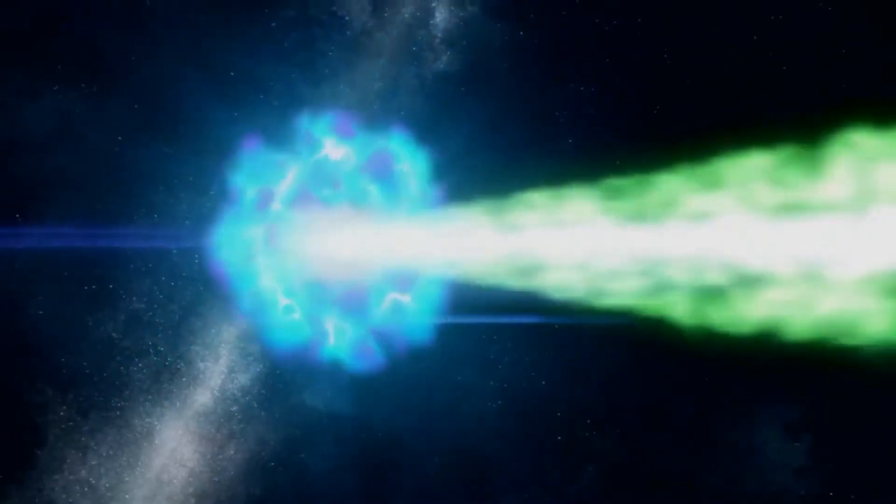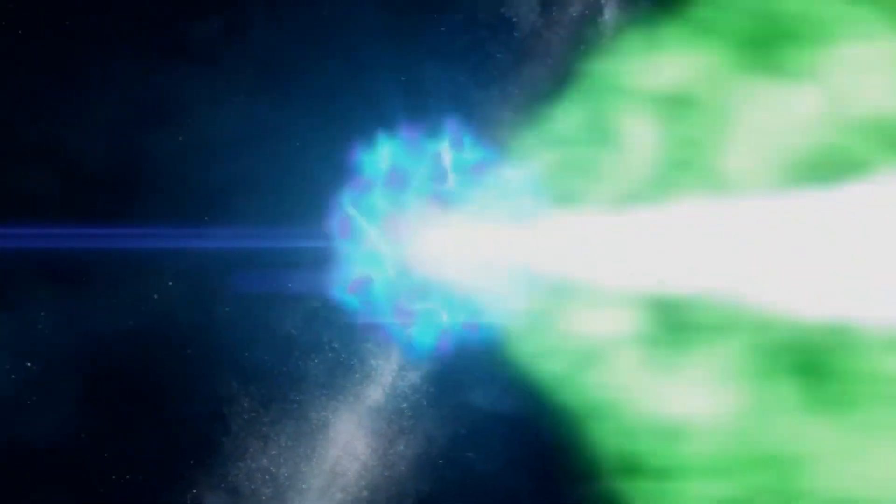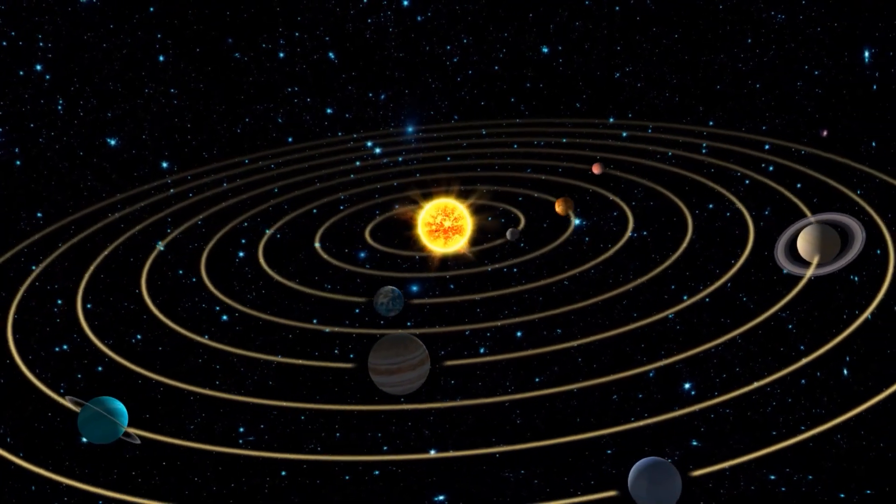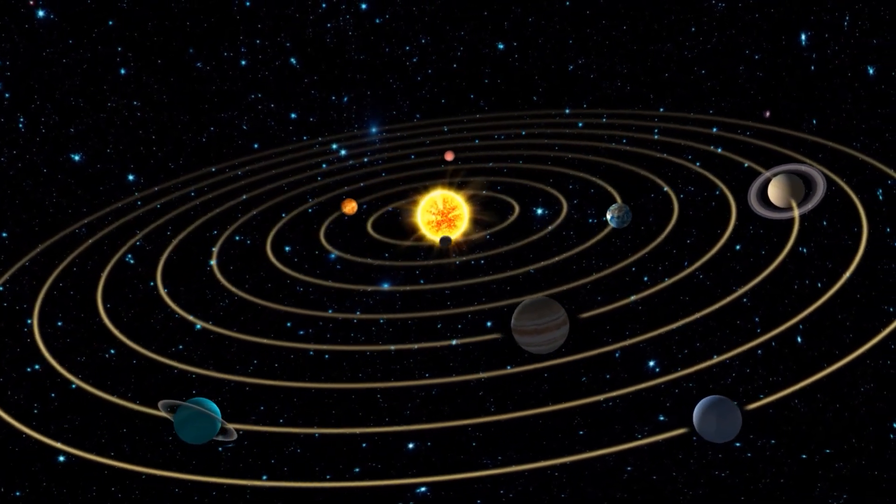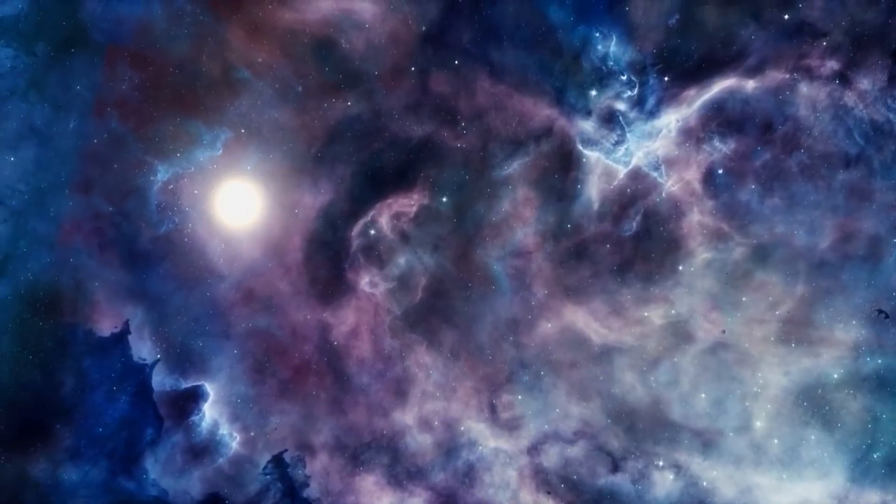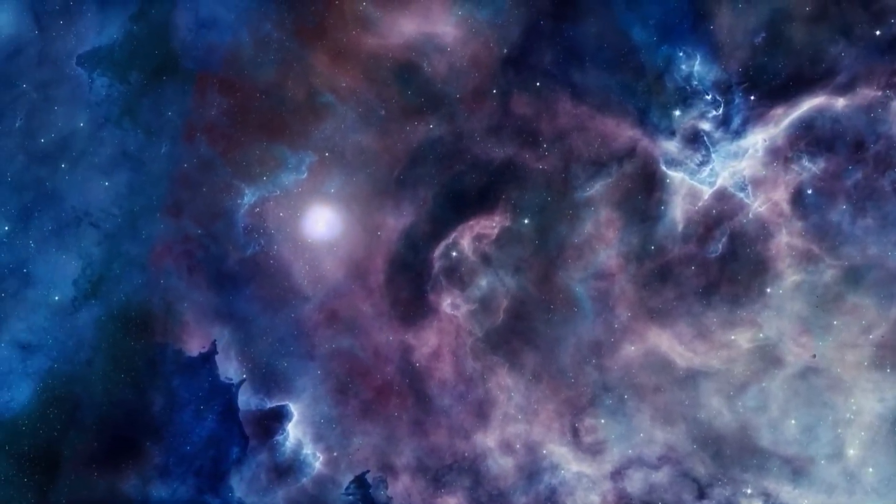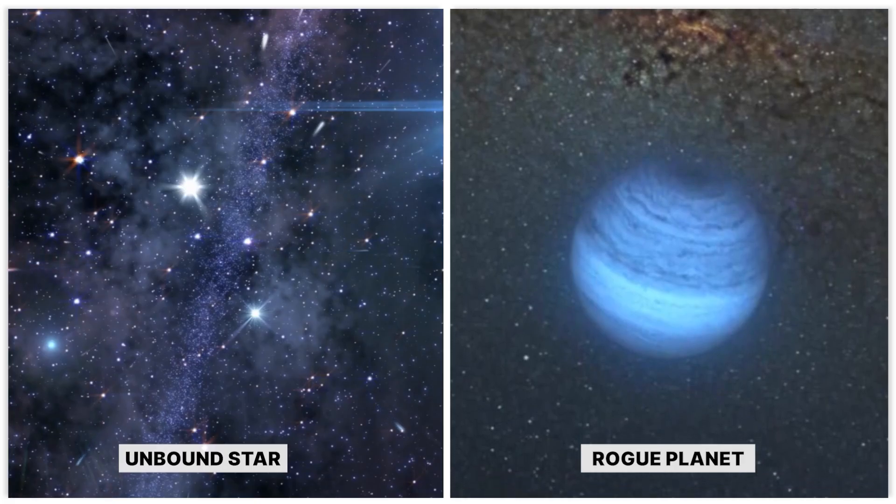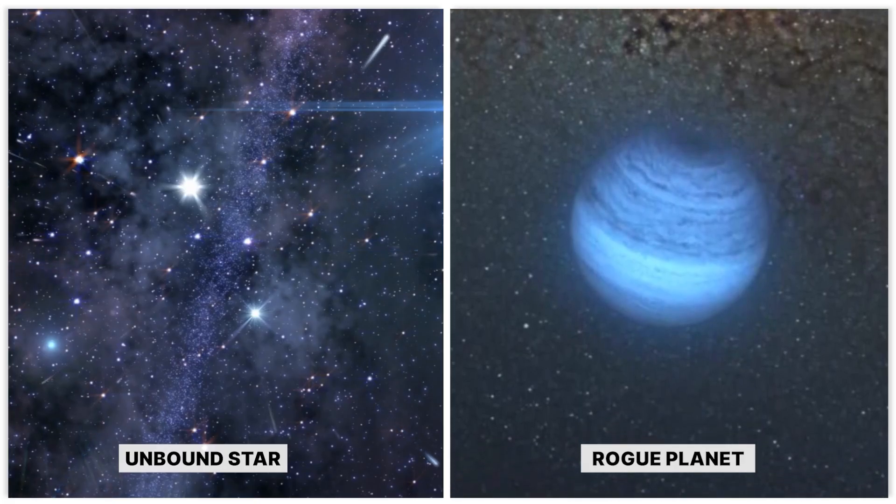These are celestial bodies that wander through space without being tied to any star system. Our own solar system, to put it mildly, is a delicate dance of gravity, finely tuned over billions of years. But what happens if a giant, unbound star or even a massive rogue planet comes too close?